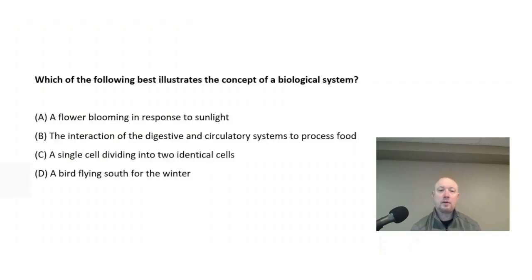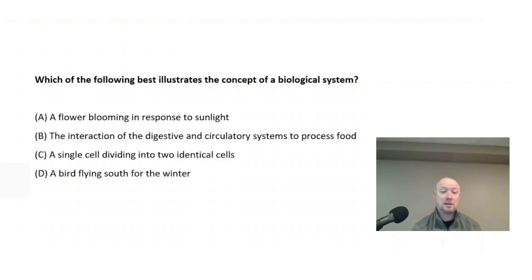Which of the following best illustrates the concept of a biological system? Is it A, a flower blooming in response to sunlight? B, the interaction of the digestive and circulatory systems to process food? C, a single cell dividing into two identical cells? Or D, a bird flying south for the winter?